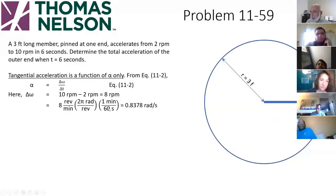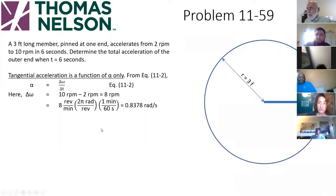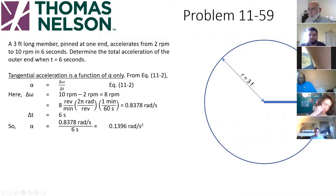Delta omega is 10 minus 2 RPM. We convert that to radians in the standard way: 2 pi radians per rev, 1 minute per 60 seconds, and we get it in radians per second. With a denominator of delta T equal to 6 seconds, we can calculate alpha. Alpha is equal to delta omega over delta T, and now we have alpha.